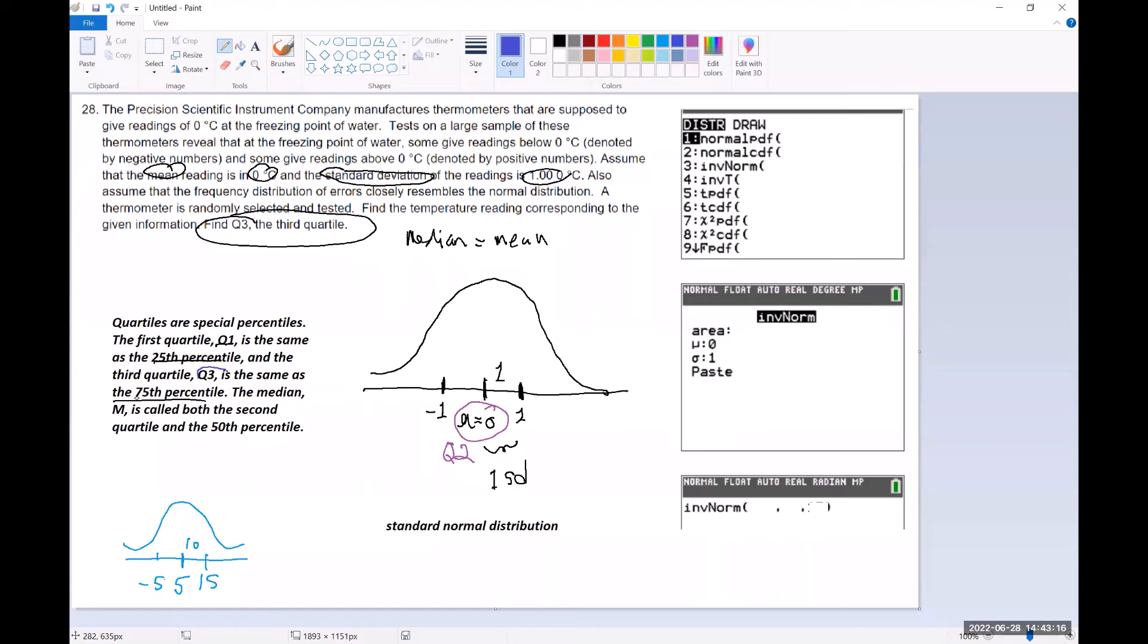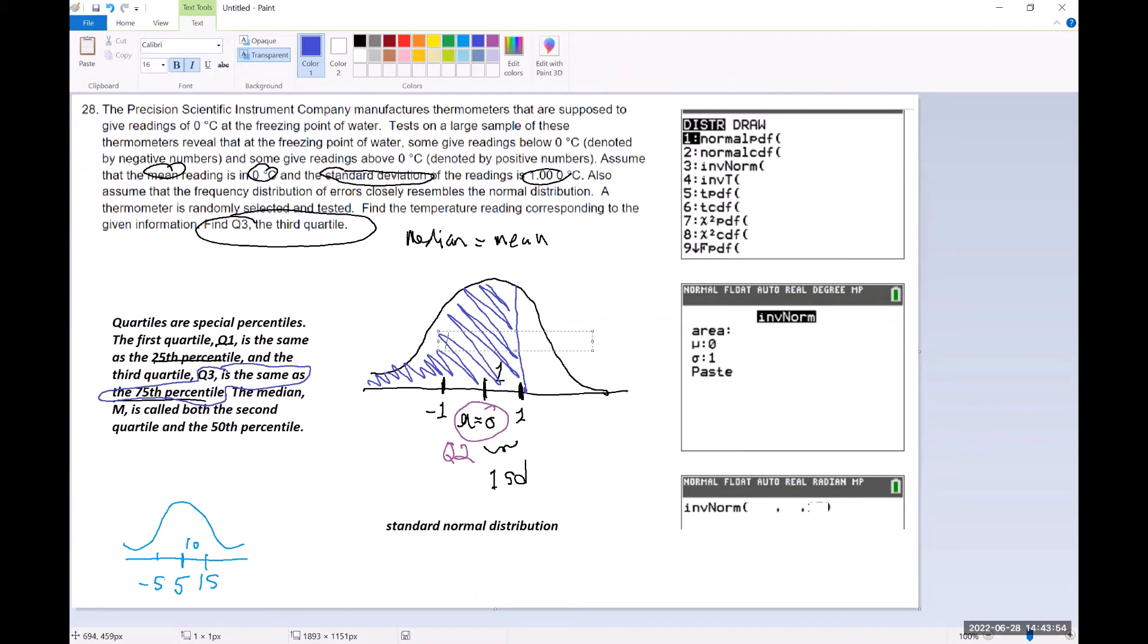Q3, which is the same as the 75th percentile—I'm really estimating because I'm not real sure where that's going to fall. I'm going to shade this in over here, and what we're going to say is that that blue shading actually represents 75 percent of the data.